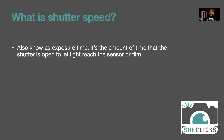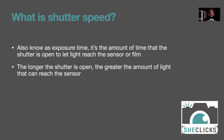So what is shutter speed? Also known as exposure time, it's the amount of time that the shutter is open to let light in to reach the sensor or film. The longer the shutter is open, the greater the amount of light that can reach the sensor.